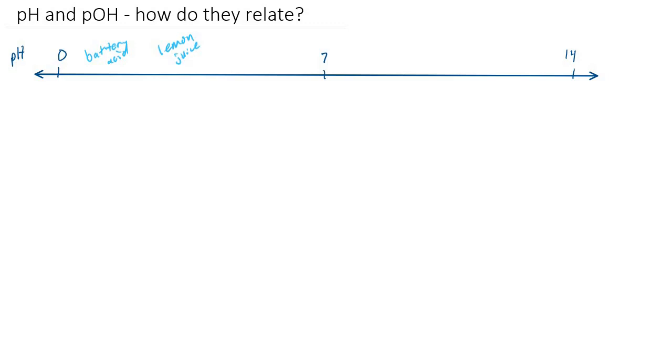And when things get above 7, then we call them basic. And there's things like lye or ammonia and a host of other things. And this 7 is what we consider to be neutral.